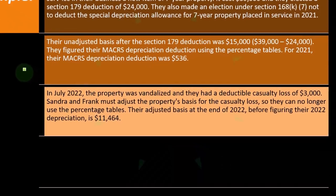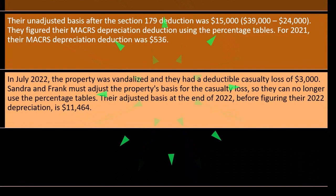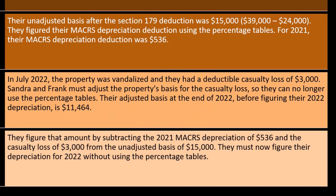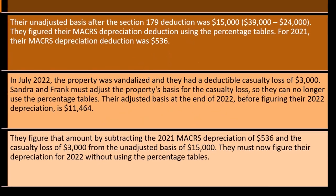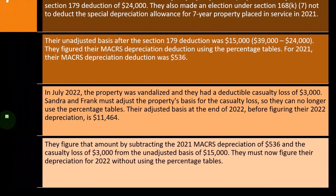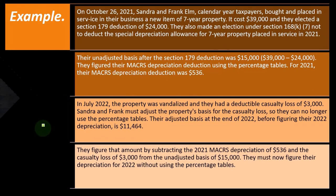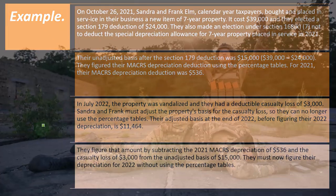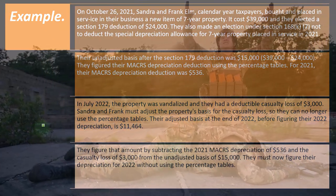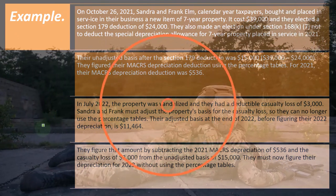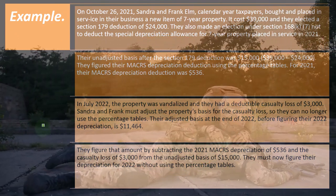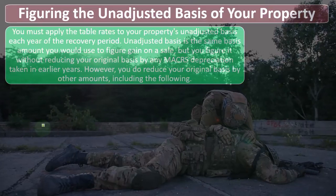Their adjusted basis at the end of 2022, before figuring the 2022 depreciation, is $11,464. They figured that amount by subtracting the 2021 MACRS depreciation of $536 and the casualty loss of $3,000 from the unadjusted basis of $15,000. They must now figure their depreciation for 2022 without the percentage tables.